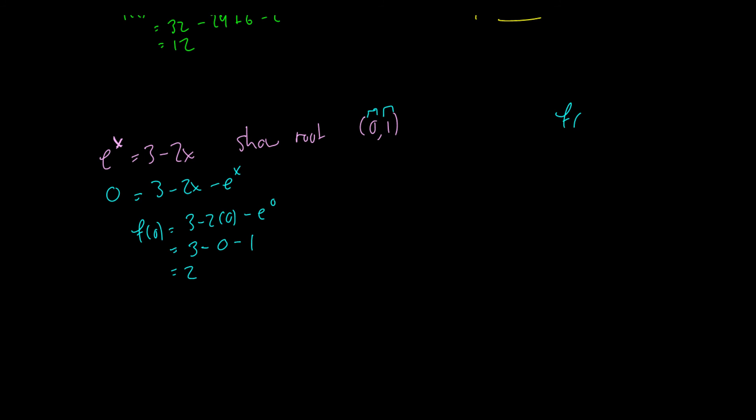All right let's put this in our database of information f(0) is equal to 2 and now f(1) is equal to 3 - 2(1) - e^1 which is equal to 1 - e.